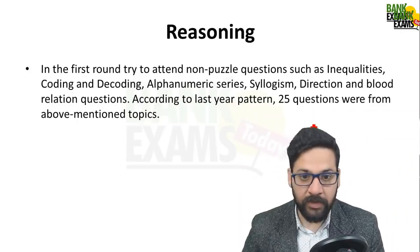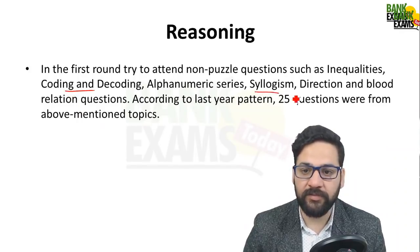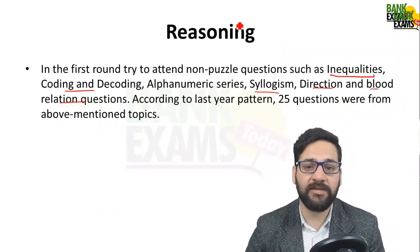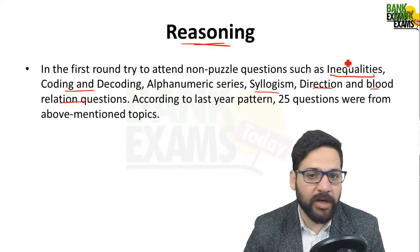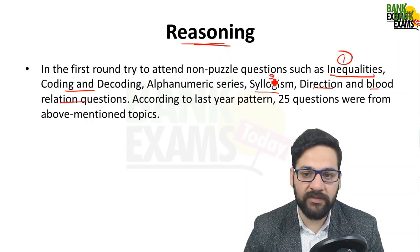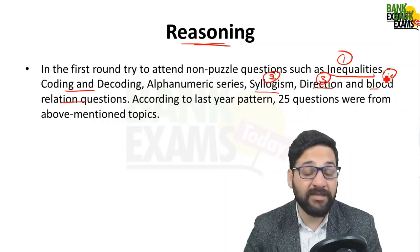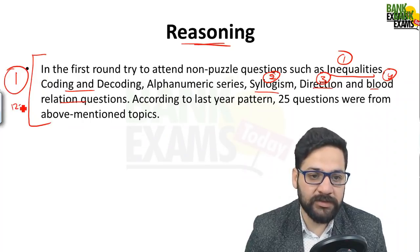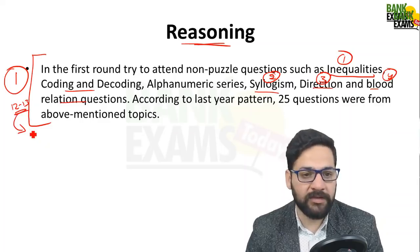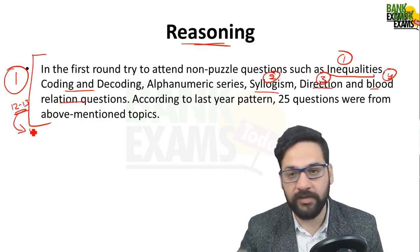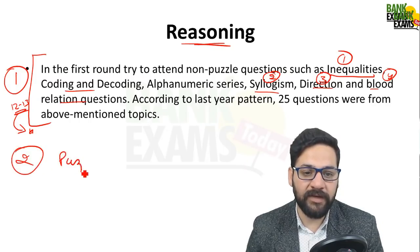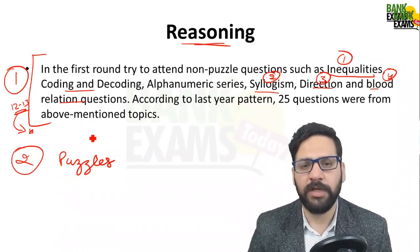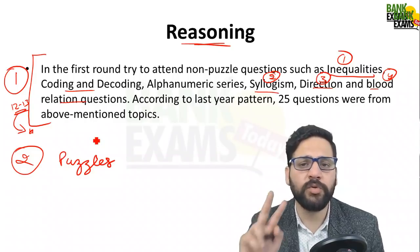The same strategy applies to reasoning. Round one is coding-decoding, syllogism, direction sense test, blood relation questions, and inequalities — inequalities is the easiest part of the reasoning section, followed by syllogism and direction sense or blood relation. Give round one about 12 to 13 minutes; you may be able to attempt 16 to 20 questions or more. Round two is puzzles and seating arrangements — never attempt puzzles at the beginning.